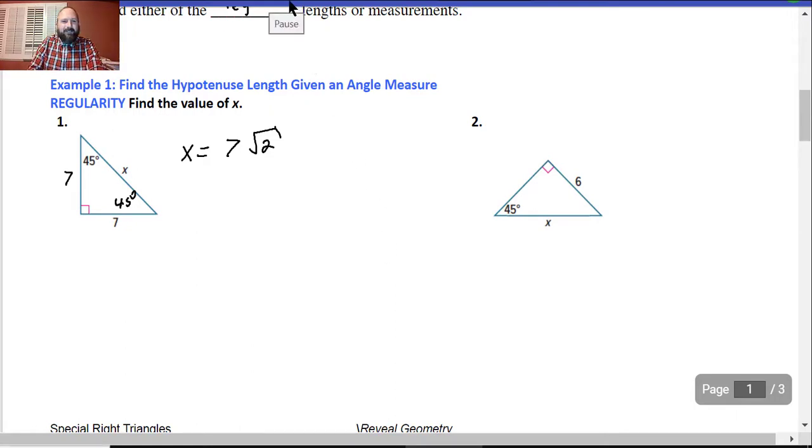Alright, let's go on. So once again, I know there's a 45, 45, 90 degree triangle, so this has to equal 6. So this guy right here has to equal x times radical 2, or 6 radical 2. That's it.